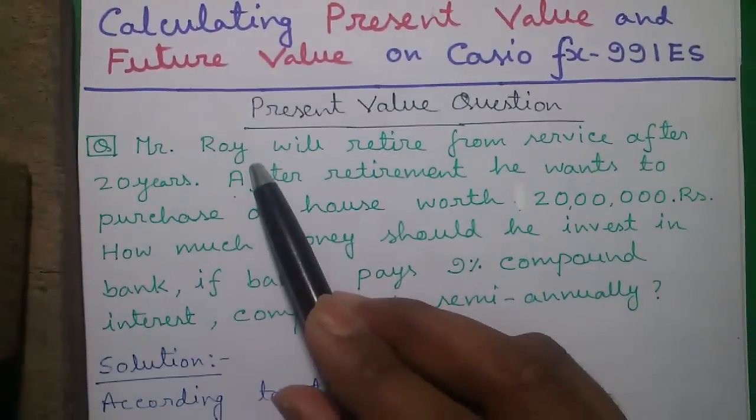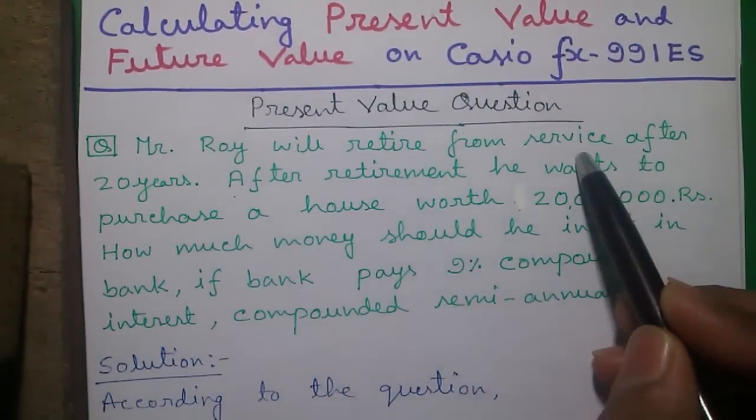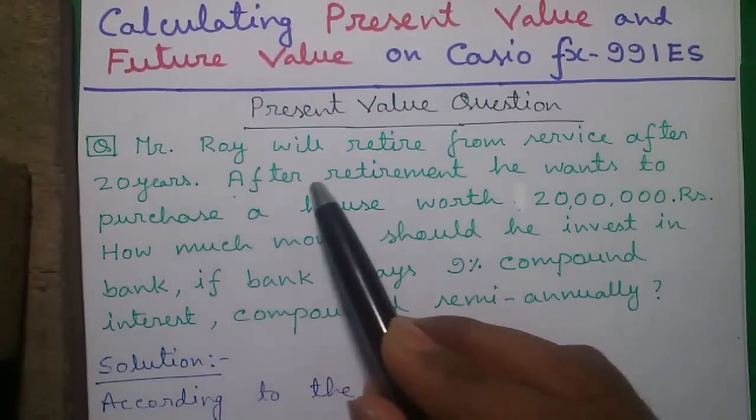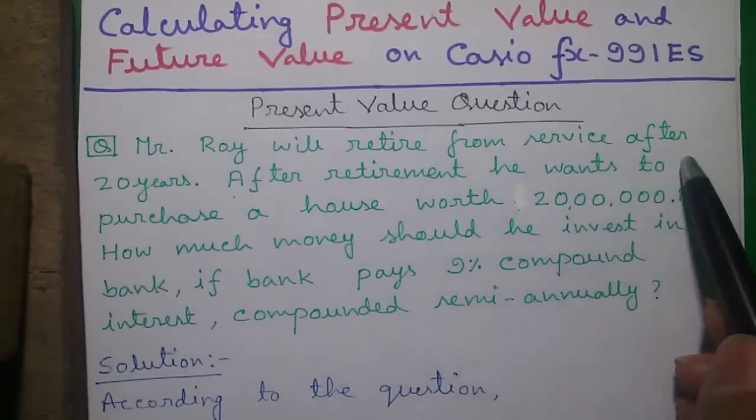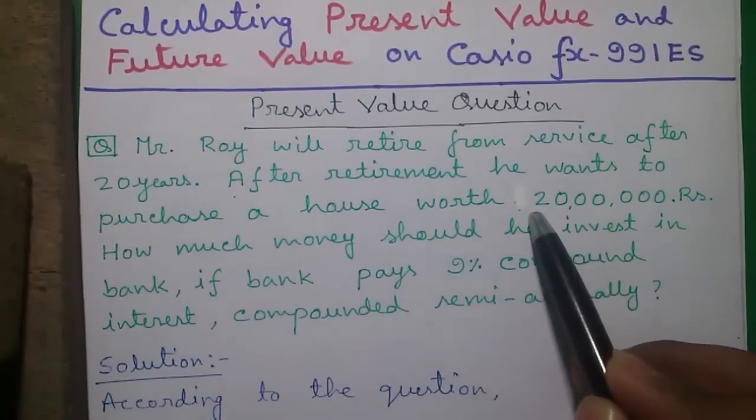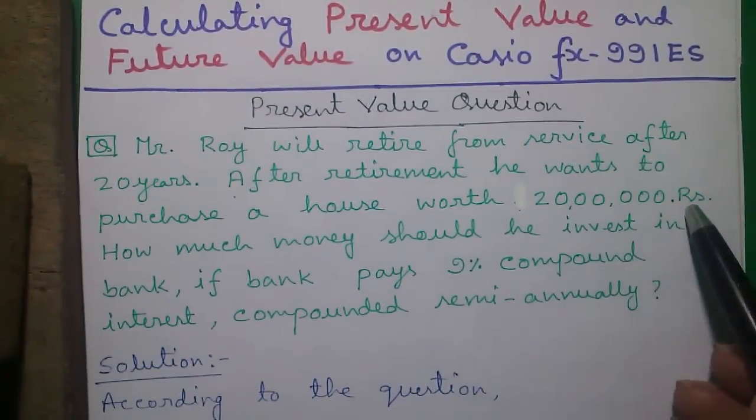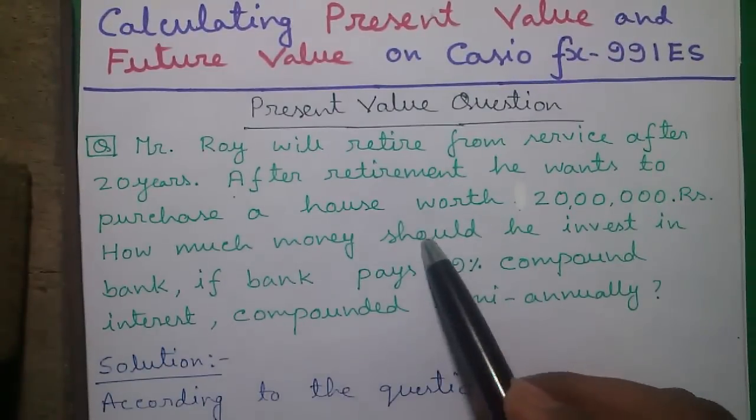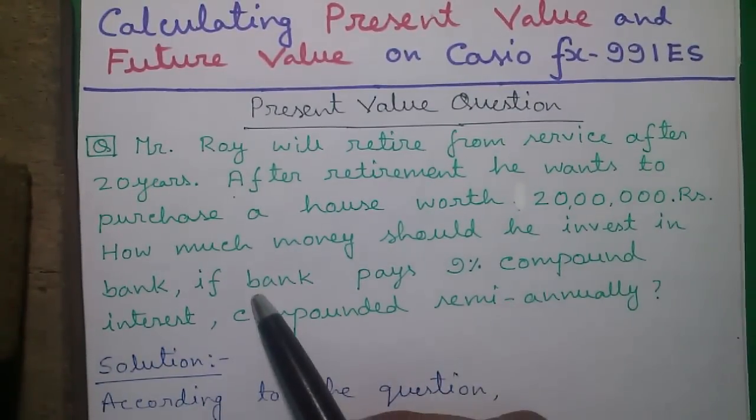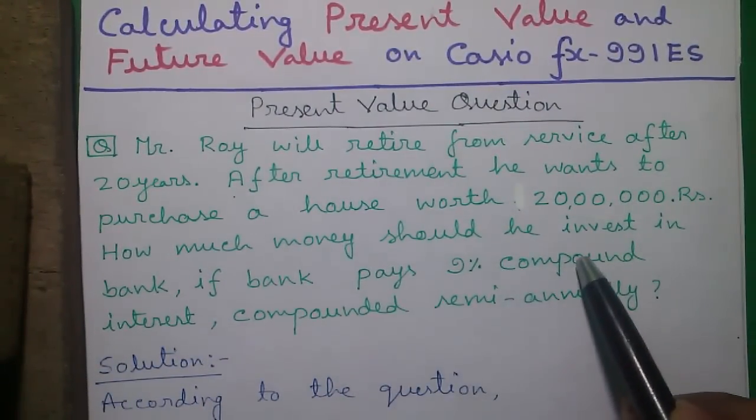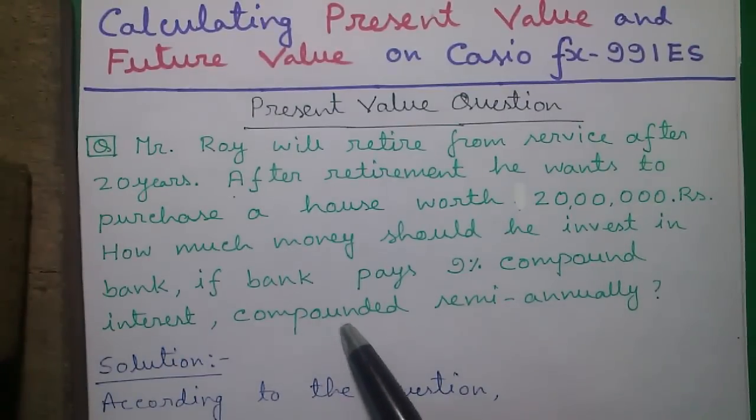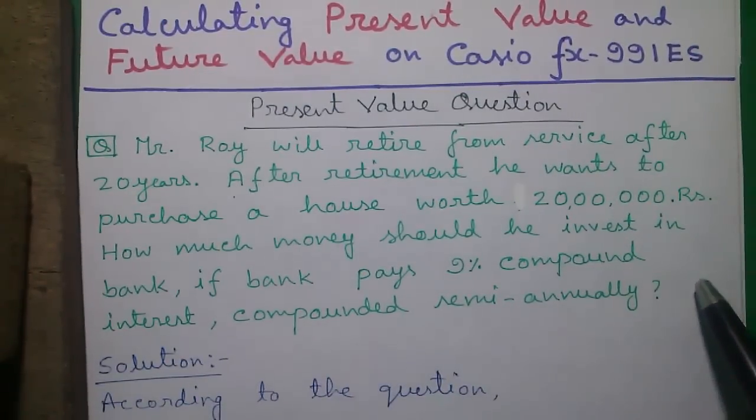Our question is Mr. Roy will retire from service after 20 years and after retirement he wants to purchase a house worth rupees 2 million or 20 lakhs. How much money should he invest in bank if bank pays 9% compound interest compounded semiannually, that is twice in a year.